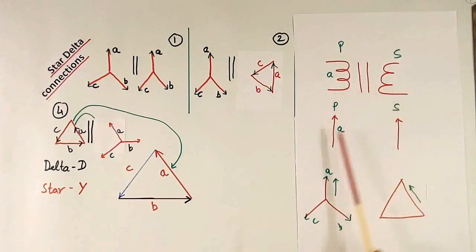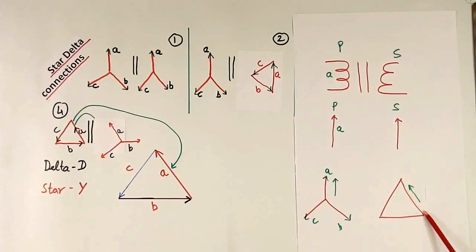In any transformer, primary and secondary voltage have same direction. Suppose primary direction is like this, secondary also will be like this. It will not be like this. This is possible if primary itself is connected across line to line like this. Then only you will get, otherwise not.